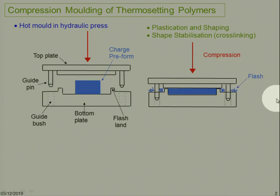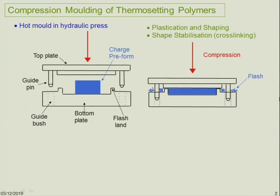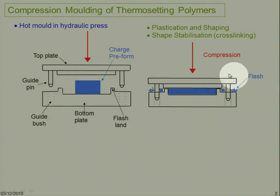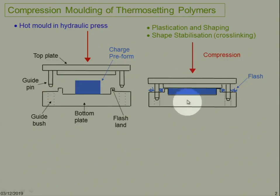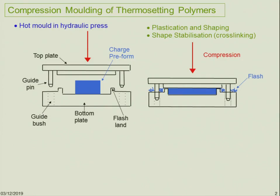The extra material can be seen at the edges — we call this flash. Flash is a sign that the mold is completely full of material. For example, if we need 25 grams of material, we might add 26 or 27 grams. The extra bit ensures we have flash and no voids in the mold. Flash is important to confirm the mold is completely full. We lower the mold — manually or automated — applying compressive force.